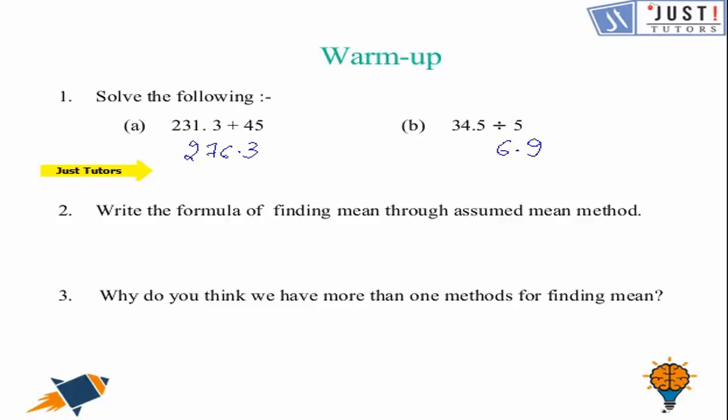Let's go to question number 2 that says write the formula for finding mean through assumed mean method. That would be x bar is equal to a plus sigma fi di divided by sigma fi.